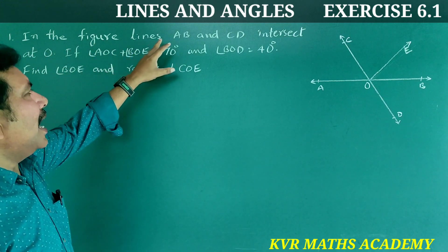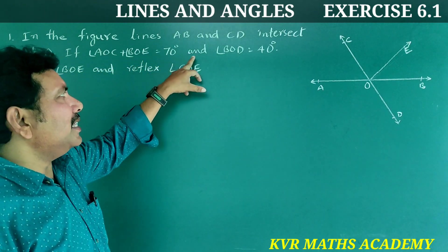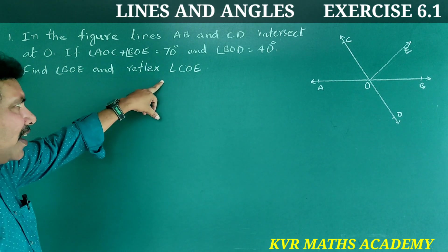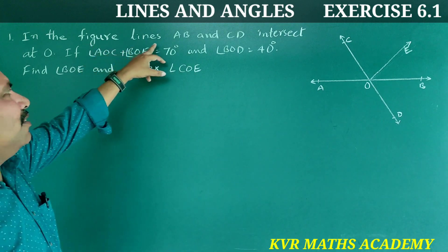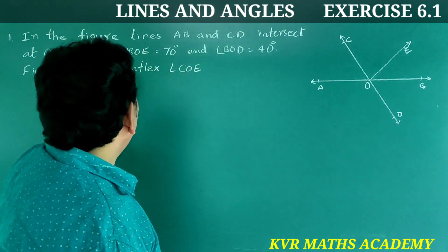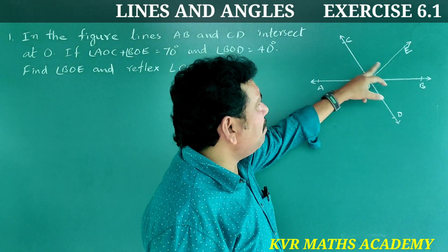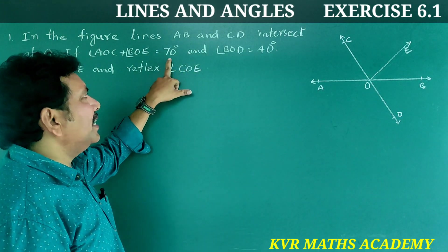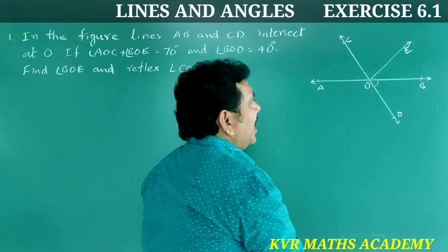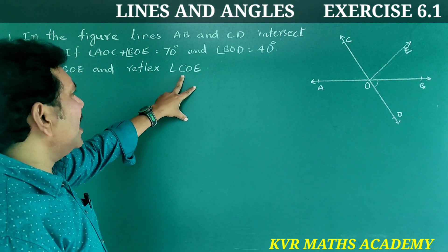First question: In the figure, lines AB and CD intersect at O. If angle AOC plus angle BOE is equal to 70 degrees, and angle BOD is equal to 40 degrees, find angle BOE and the reflex angle COE. Lines AB and CD intersect at O. Angle AOC plus angle BOE is equal to 70 degrees, angle BOD is equal to 40 degrees.